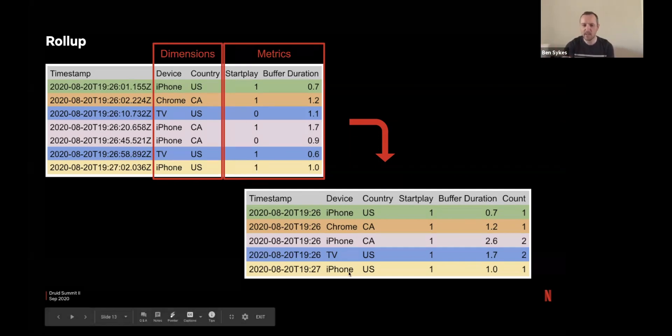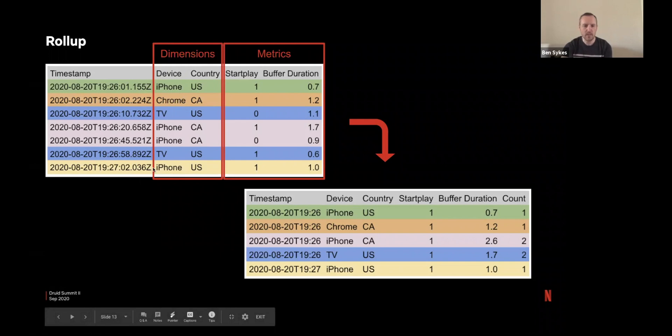This happens automatically for us during ingestion time. So the resulting table here goes from our seven rows into five rows. And the reason we don't roll this yellow row with the green row is because it's in a different minute bucket.